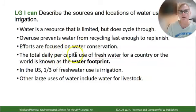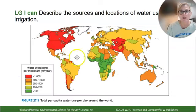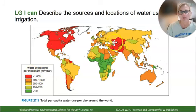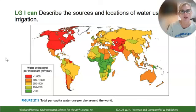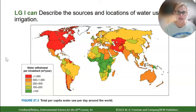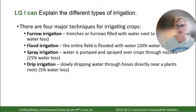The total daily per capita — meaning per person — water use is called a water footprint. In the U.S., about a third of fresh water goes to irrigation, which is lower than the global average of 70%. Other large uses include livestock, since the United States consumes a lot of meat. Looking at a world map of water withdrawal per inhabitant, the U.S. and Canada show the highest use. A person's water footprint also includes water used in factories, to cool machinery in power plants, and to raise cattle.